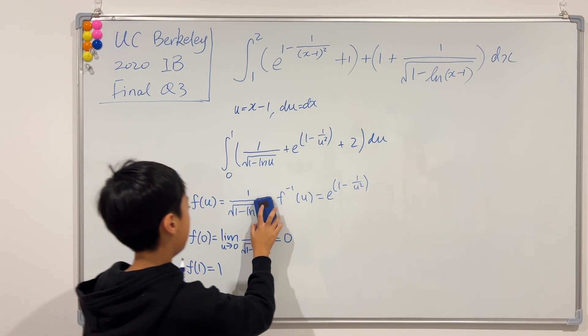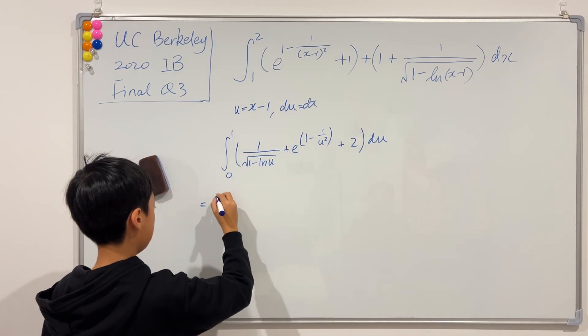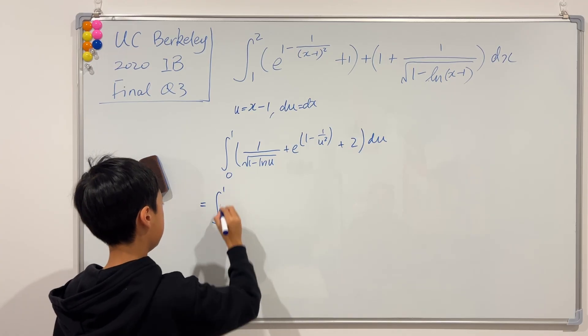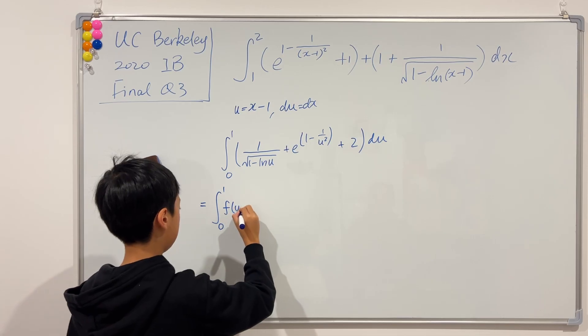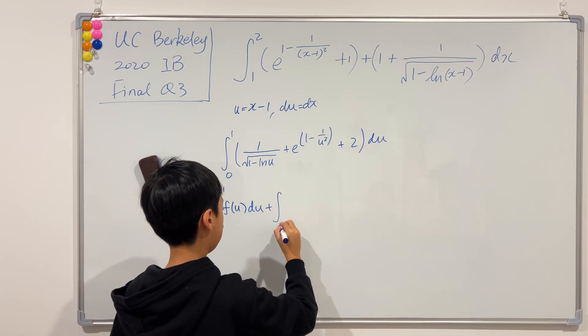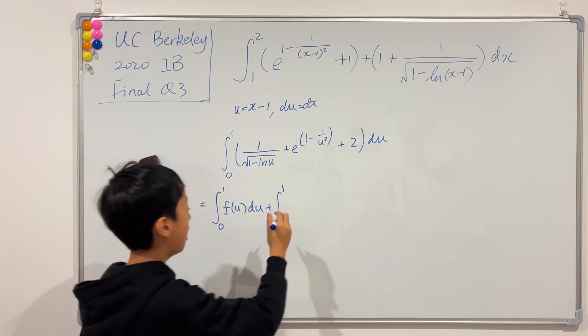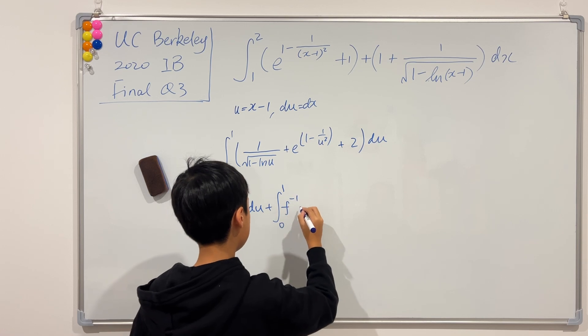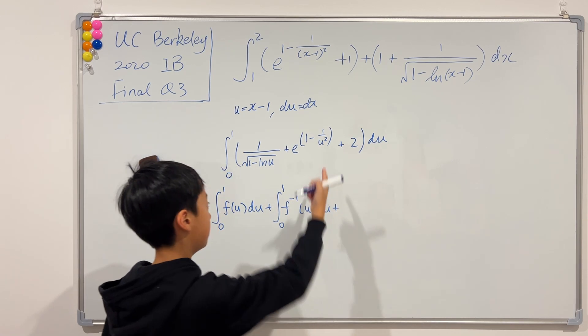So if I rub all of this out, then we'll get this is equal to the integral from 0 to 1 of, we said this was f(u), and plus the integral from f(a) to f(b), which is still 0 to 1, of f inverse u. And of course, don't forget the lonely 2.